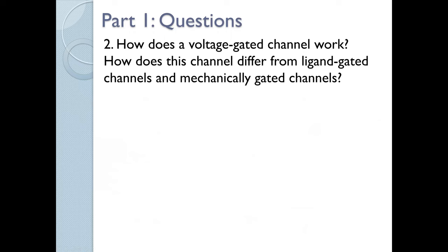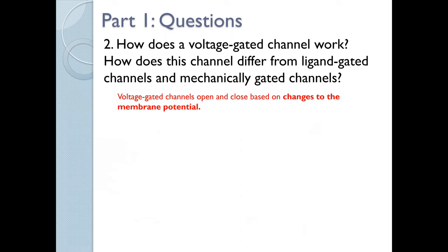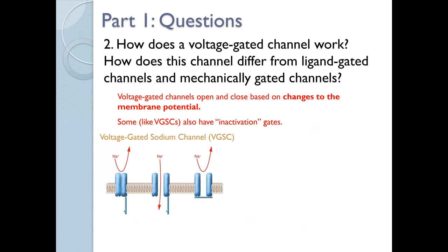Question two: how does a voltage-gated channel work, and how does this channel differ from ligand-gated channels and mechanically-gated channels? Voltage-gated channels open and close based on changes to the membrane potential. Some of these channels, like voltage-gated sodium channels, actually have a second gate called an inactivation gate — so they have a main gate and a second gate. The voltage-gated sodium channel has three different states: closed, open, or inactivated. It is closed at resting membrane potential of negative 70 millivolts, and these channels open and close based on changes to the membrane potential.